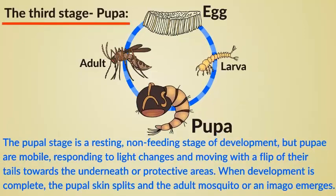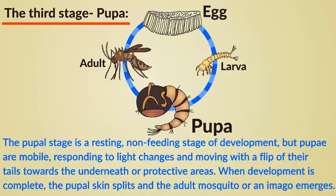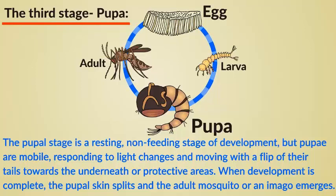The third stage: pupae. The pupal stage is a resting, non-feeding stage of development. But pupae are mobile, responding to light changes and moving with a flip of their tails towards the underneath or protective areas. When development is complete, the pupal skin splits and the adult mosquito, or imago, emerges.